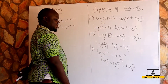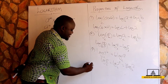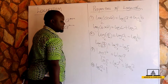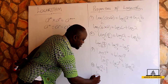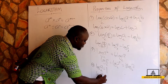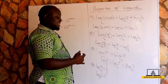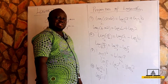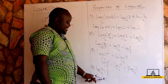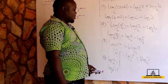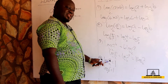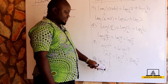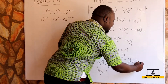The fourth law states that log a to the base a is equal to one. So if we have log five to the base five, this equals one; log six to the base six equals one. Why? Because what power do we have to raise five to in order to get five? It's one. Five raised to the power one is five, so the log of a number to the same base is equal to one.